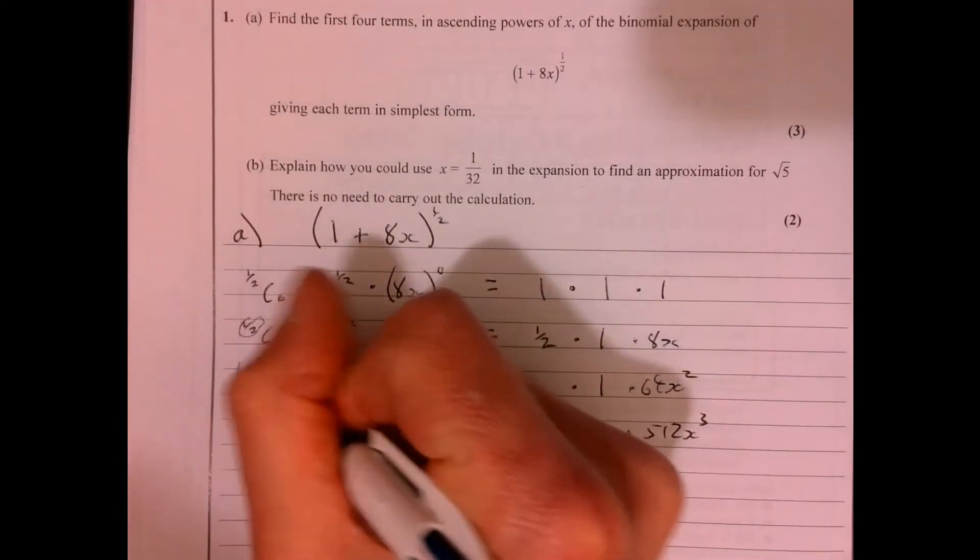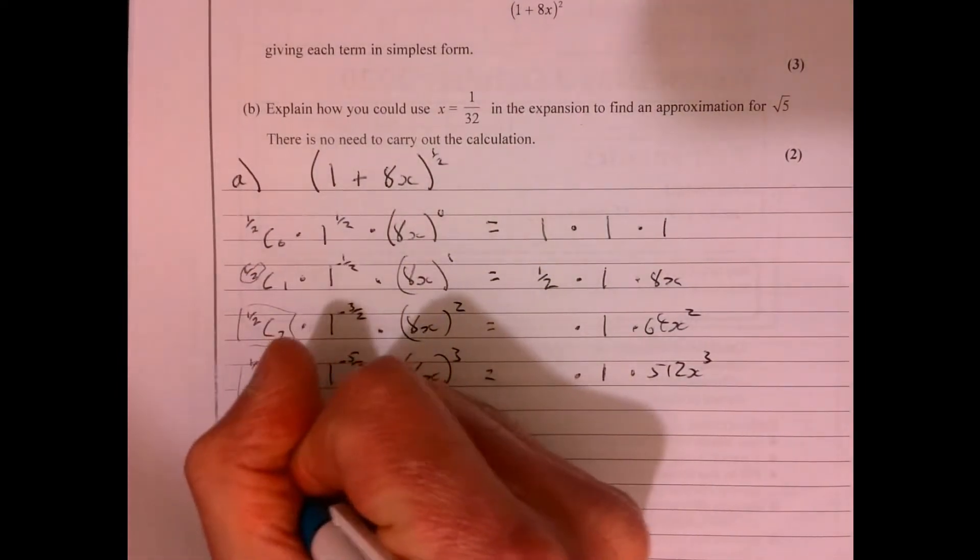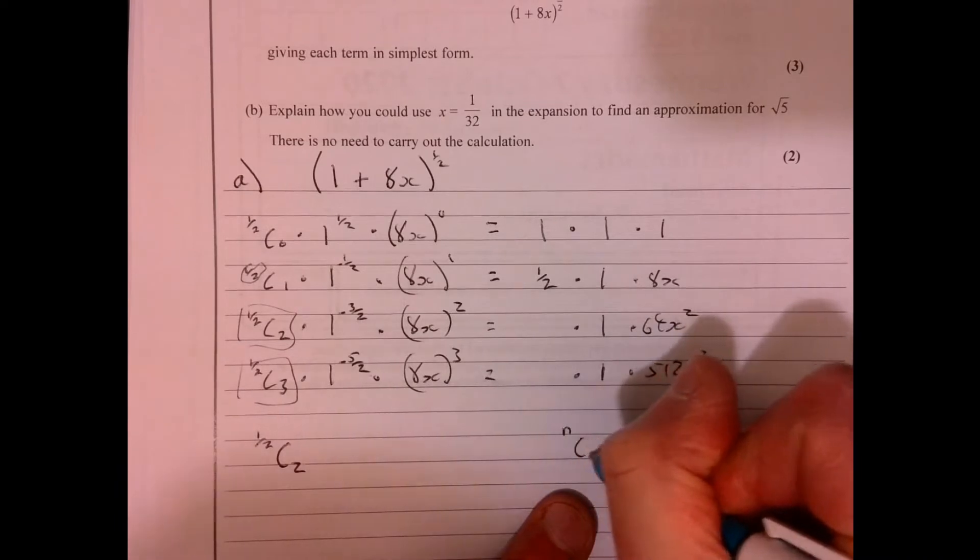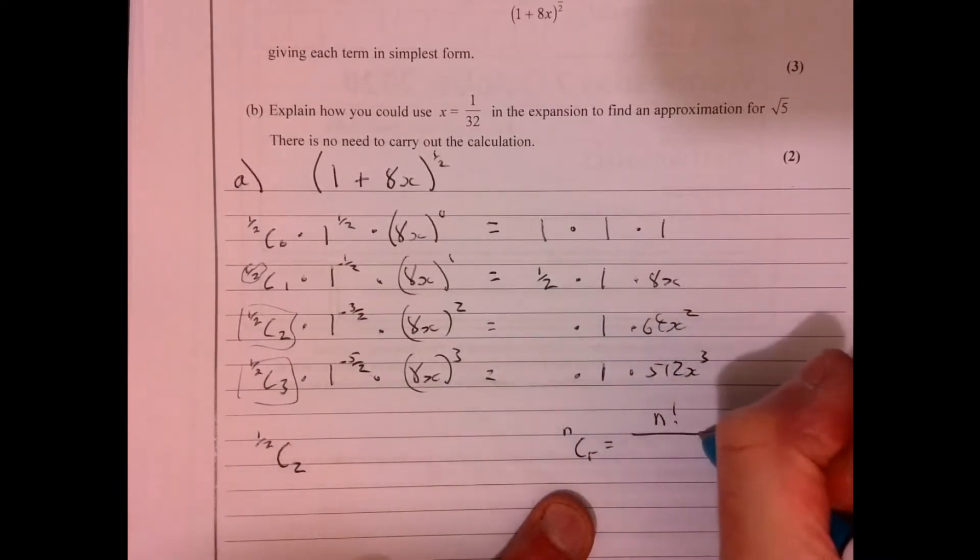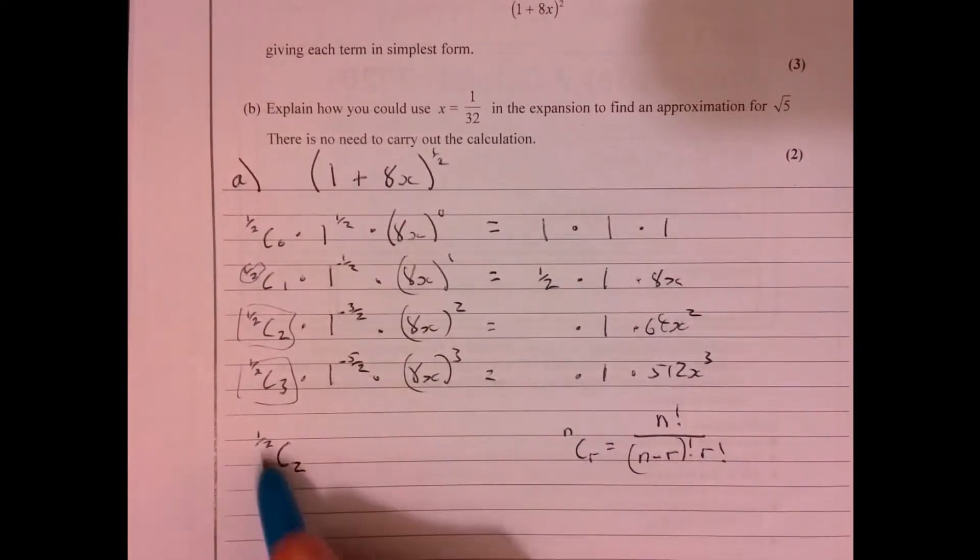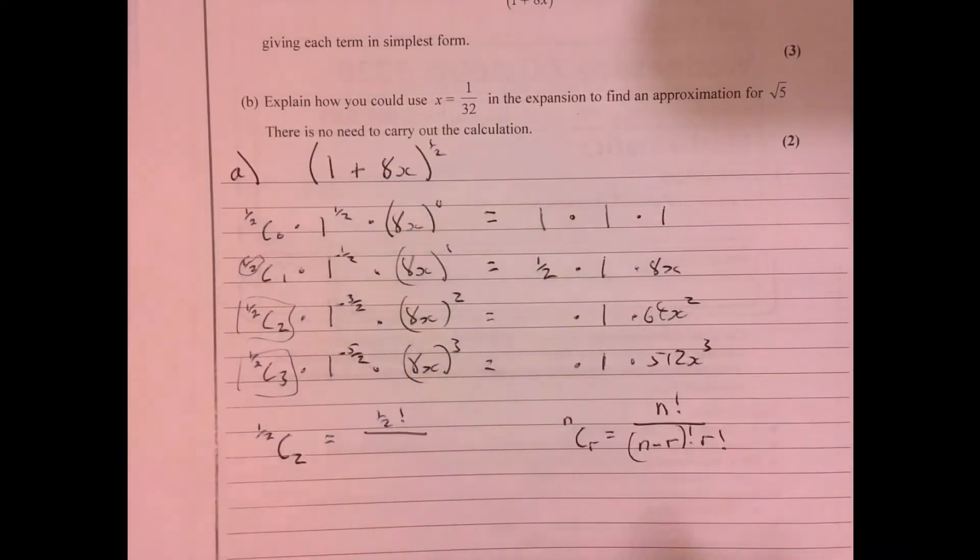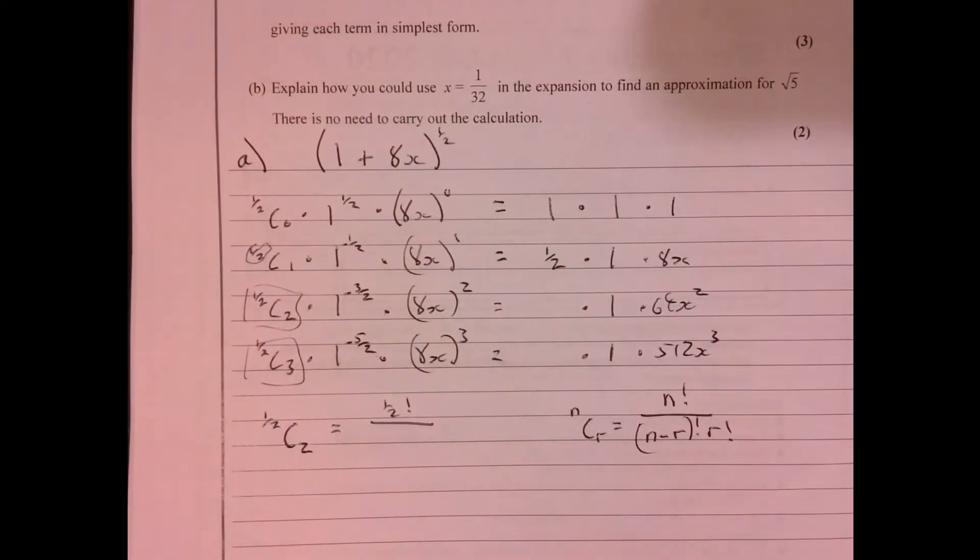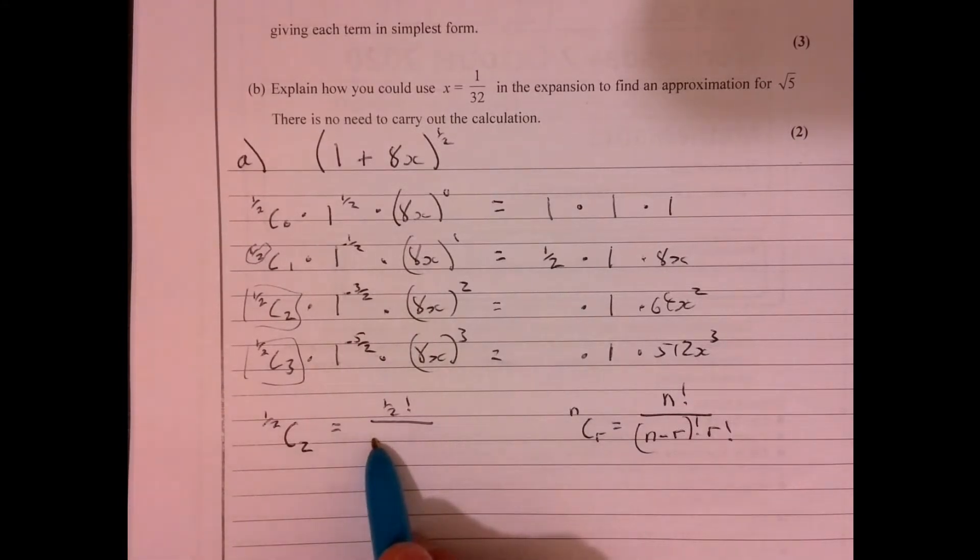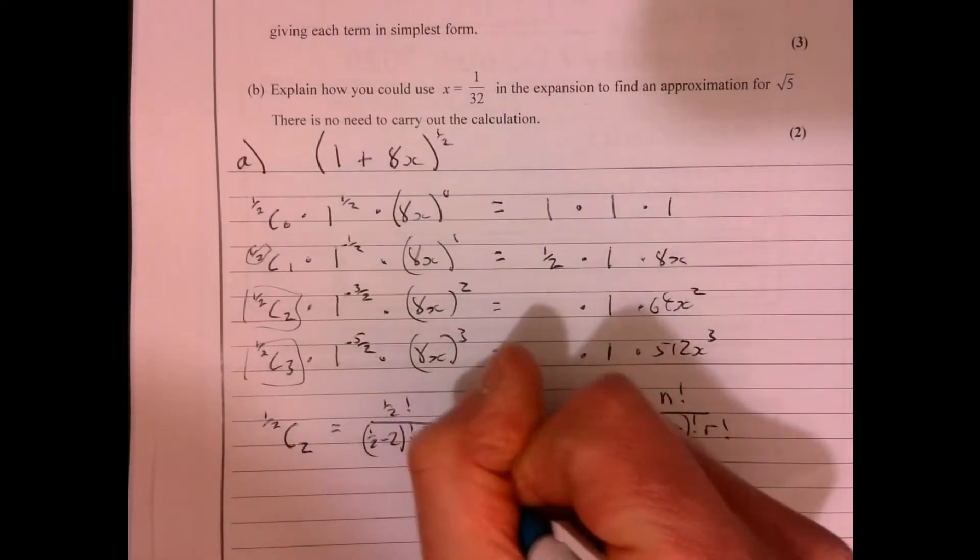Right, now the slightly tricky bit is thinking about these bits here. So let's take the first one. We've got a half C2. Now, what you should know is if I write NCR, that's equal to N factorial over N minus R factorial times R factorial.